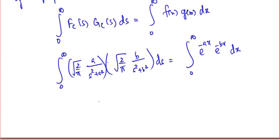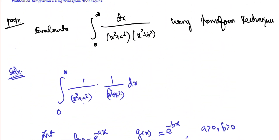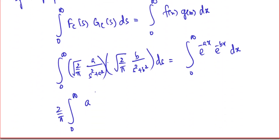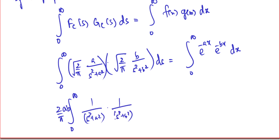This can be rewritten as: (2/π) can be taken outside, and a and b can also be factored out. So the integral from 0 to infinity of 1/(s² + a²) · 1/(s² + b²) ds equals (2ab/π) times the integral from 0 to infinity of e^(−(a+b)x) dx.